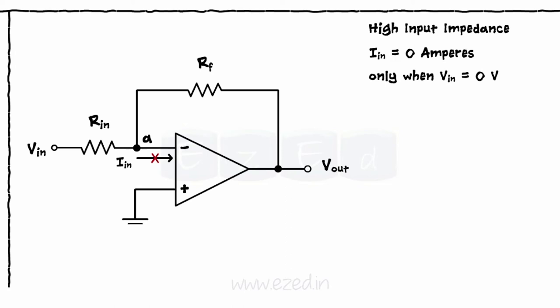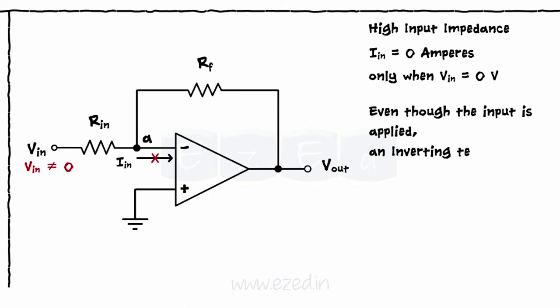Let's assume that some input is applied to the inverting terminal keeping the non-inverting terminal at ground. Even though the input is applied, the inverting terminal also behaves as a ground terminal at node A. This concept is called the virtual ground concept.